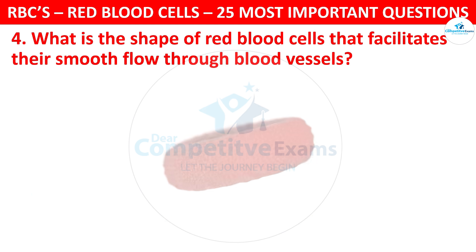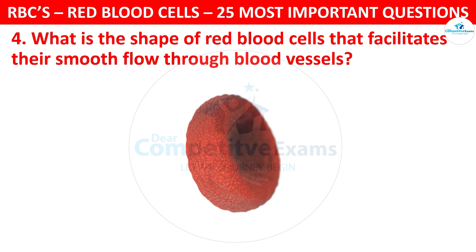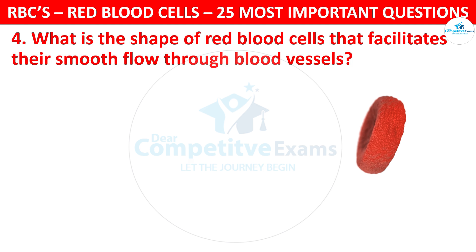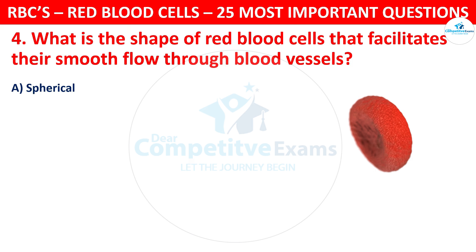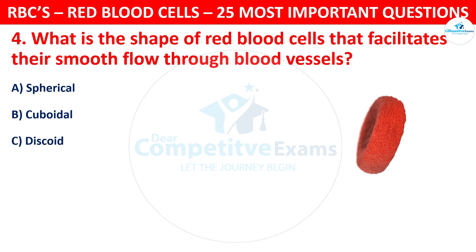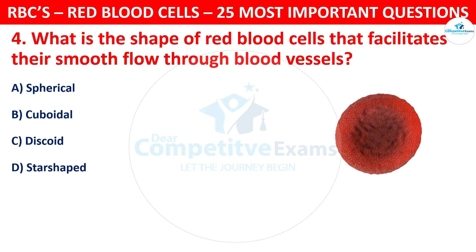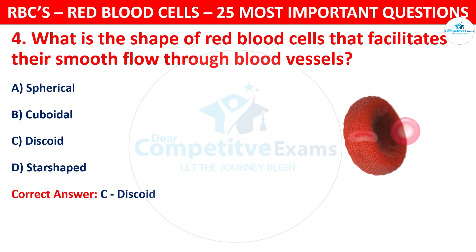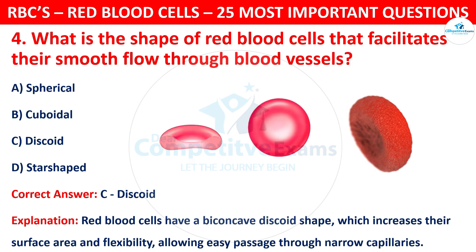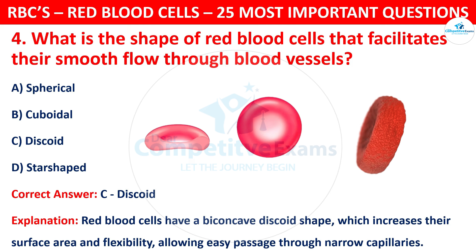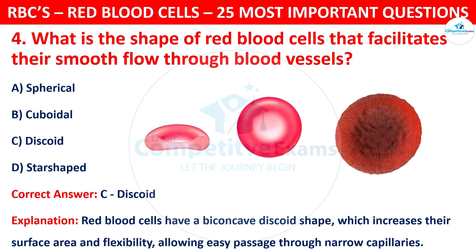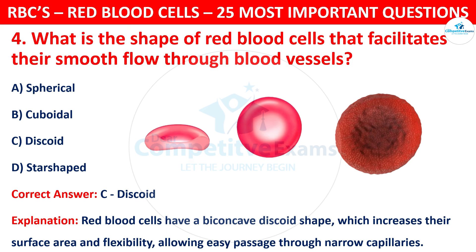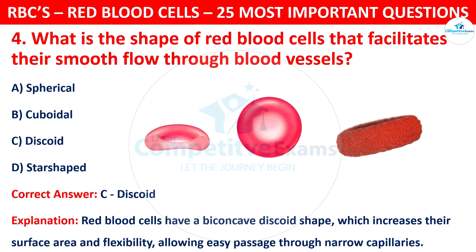Question 4. What is the shape of red blood cells that facilitates their smooth flow through blood vessels? Your options are: Spherical, Cuboidal, Discoid, or Star-shaped. The correct answer is C, that is Discoid. Red blood cells have a biconcave discoid shape, which increases their surface area and flexibility, allowing easy passage through narrow capillaries.